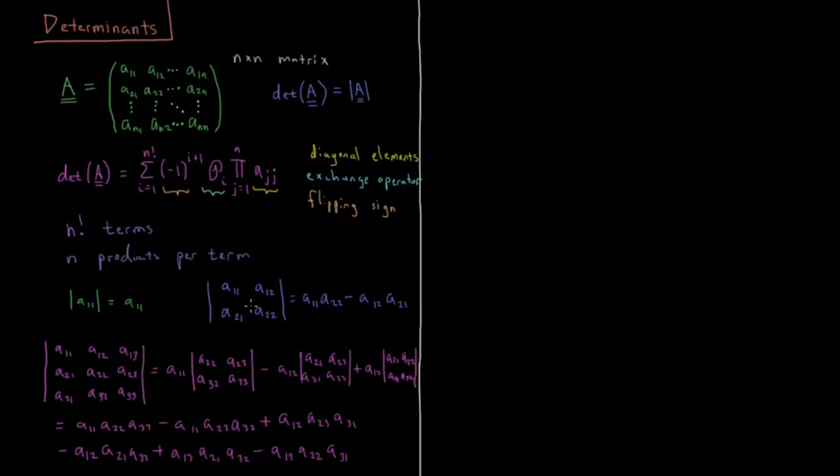The determinant of a two by two matrix, all the possible ways we can multiply down elements, having elements of each row and column exactly once, is we do A11 times A22, that's the first one. Then we flip two indices, we go A12, A21, those are the only two possible. And since we did one exchange in order to do this result, this gets a minus sign here. So this is A11, A22, minus A12, A21.